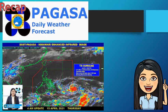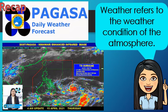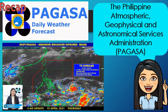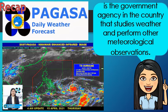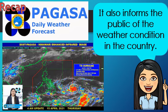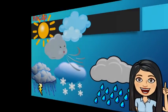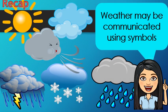Last week, we learned about weather. Weather refers to the condition of the atmosphere. Do you still remember what is the meaning of the acronym PAGASA? PAGASA stands for Philippine Atmospheric Geophysical and Astronomical Services Administration. It is the government agency that studies weather and performs other meteorological observations, and also informs the public of the weather condition in our country. We also discussed that weather may be communicated using symbols.